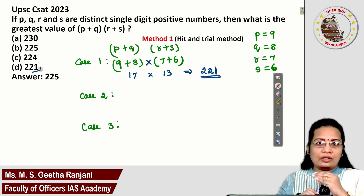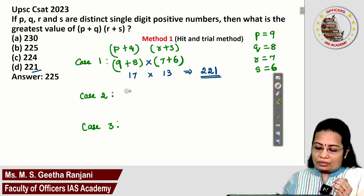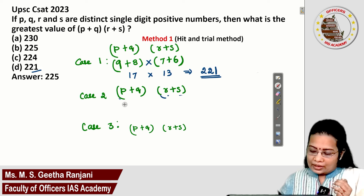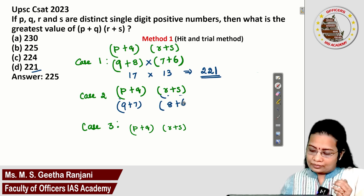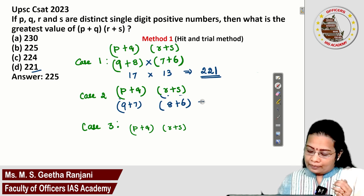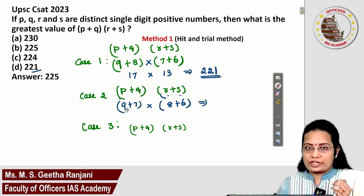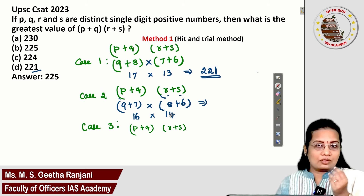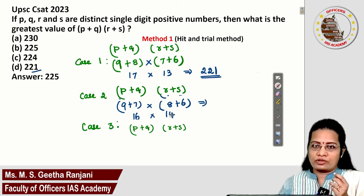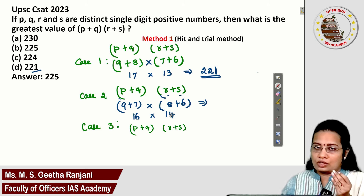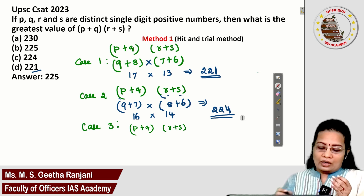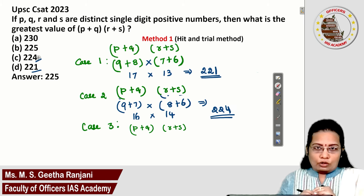For Case 2, we take (9+7) × (8+6). So 9+7 is 16, and 8+6 is 14. What is 16 × 14? 16 × 10 is 160, and 16 × 4 is 64, giving a total of 224. Since 224 is also given as an option, we can remove 221 as it is no longer the greatest.